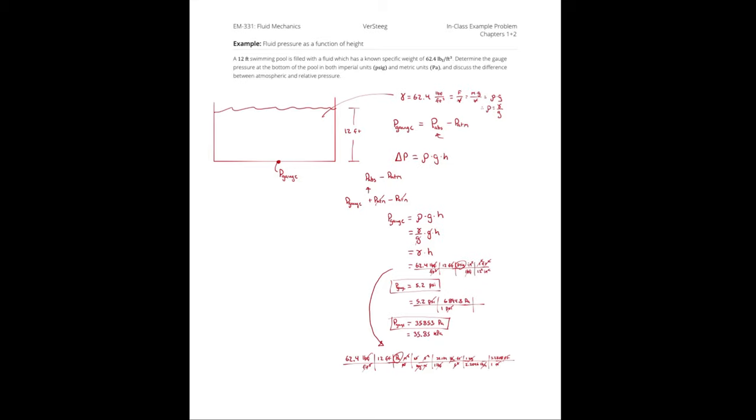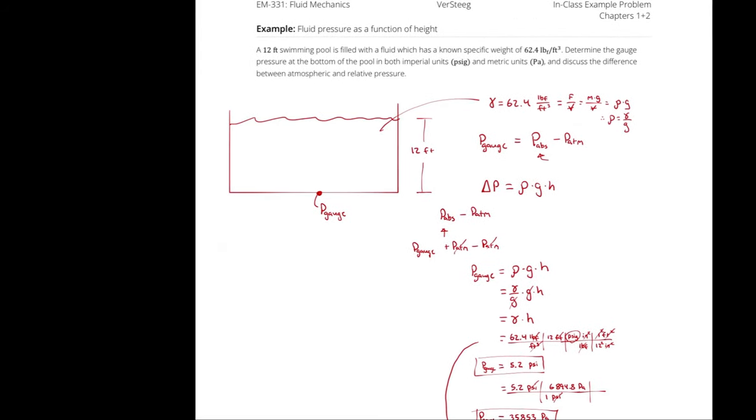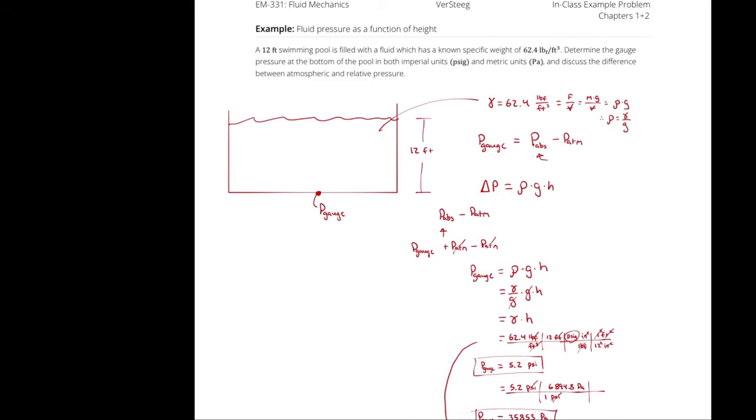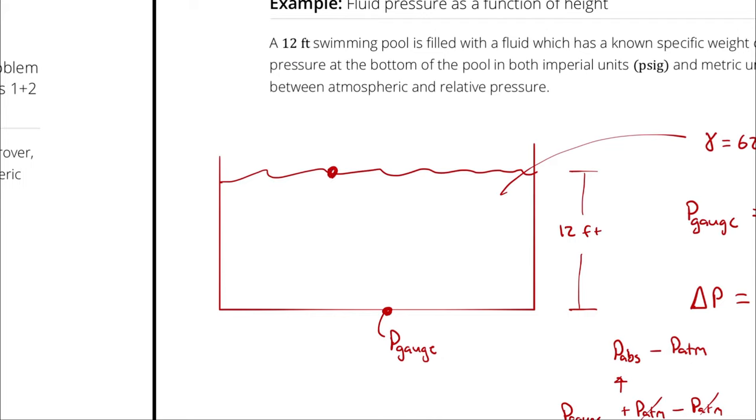The last thing I asked for here was a discussion of the difference between atmospheric and relative pressure. Well, that atmospheric pressure here is indicating the pressure at the top of the pool, at the interface between the pool and what is presumably air around the pool. And the relative pressure at that point is zero, because relative pressure is describing the pressure difference between the absolute pressure, that is, the actual pressure experienced, and atmospheric pressure.